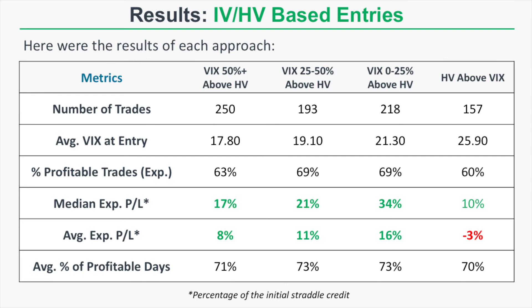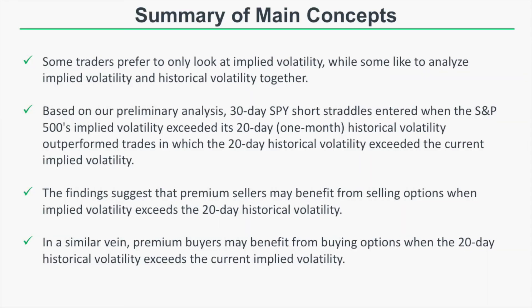The main takeaway is that the options sold when historical volatility was above the VIX were the least profitable with the lowest success rate — even though the VIX was highest in that scenario. The straddles sold when the VIX was above historical volatility did better than those sold when historical volatility exceeded implied volatility. That's a very interesting finding.